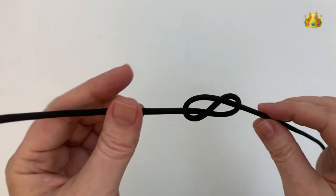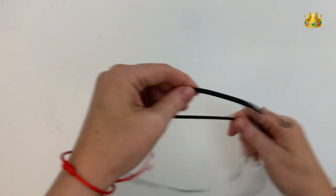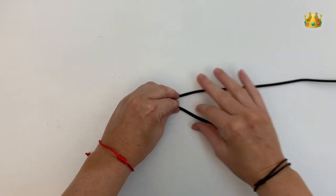You can put this figure 8 knot in the middle of a cord but it does work really well on the end as a stopper knot as well. If you do want to place it on the end of a cord,